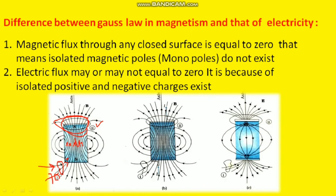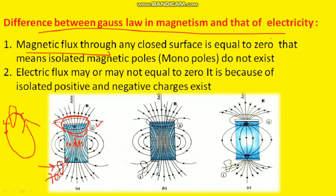This is because magnetic field lines are closed curves. For any closed surface, however many lines leave, the same lines come back to that surface because they are closed curves. That is why for any closed surface, inward flux and outward flux are equal, making the net flux equal to zero. Magnetic flux through any closed surface is always zero.